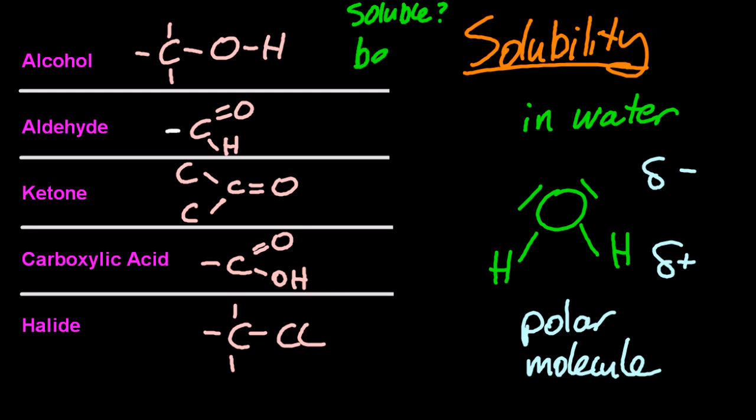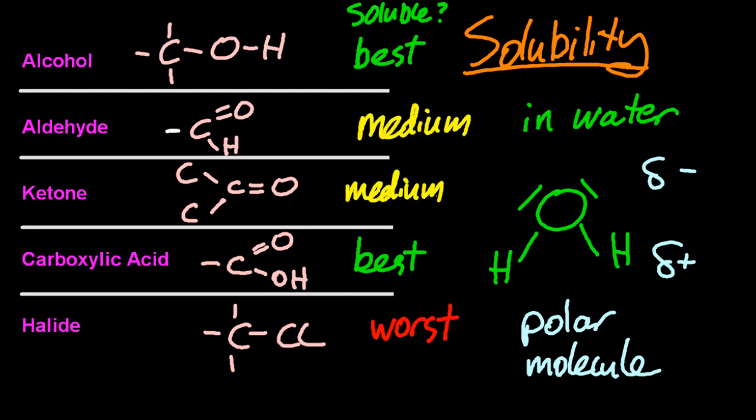So what's the most polar? That's the one that should dissolve the best. Alcohol has hydrogen bonding and carboxylic acid hydrogen bonding, a special sort of dipole, it's very strong. Halide has the weakest dipole, and aldehyde and ketone have like an intermediary strength dipole. It's a little more sophisticated than that.